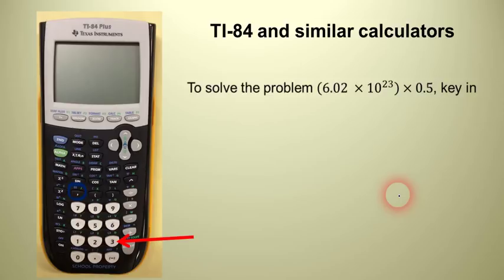Now, 23, so you've hit 6.02, second EE, 23, times 0.5. Okay, that's what you have to type in. If you type in some other combination of keys, there's a good chance you're going to get the wrong answer.